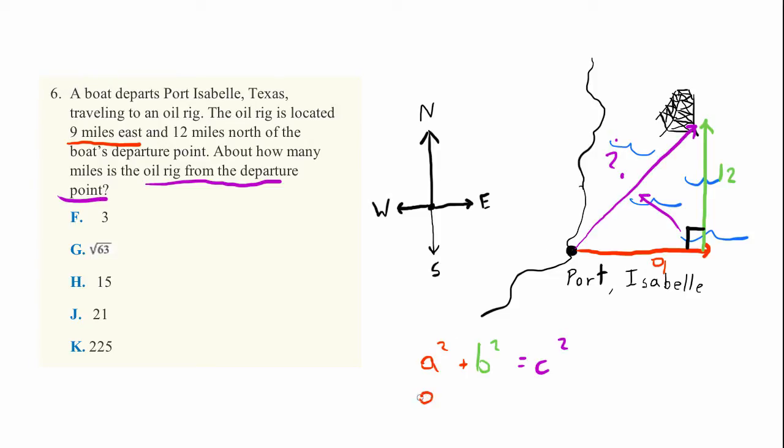We can just plug in the values here. So 9 squared plus 12 squared is equal to c squared, which is the distance that we care about. And if we go ahead and pull out a calculator here.